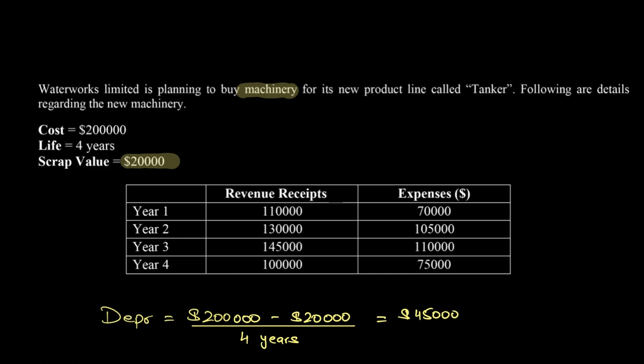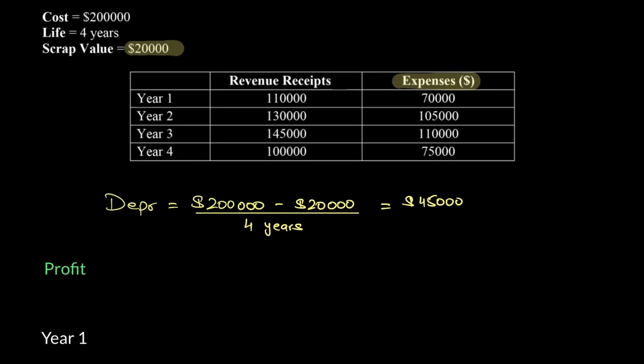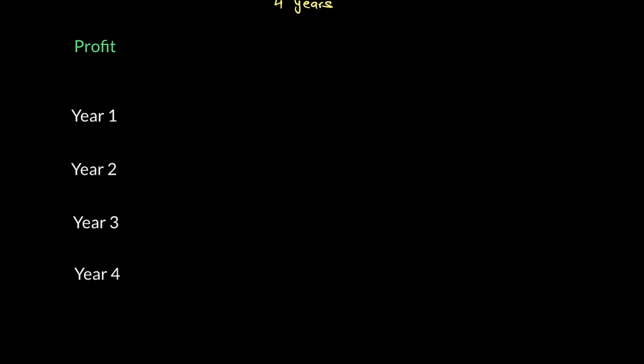Now what information do we have? They've given us the revenue receipts. That's the receipt that they expect they will earn every year. And they've given us the word expenses. So if you guys see the word expenses, expenses is an accounting word. It means that this includes your cash expenses and this depreciation too. So depreciation is included in these expenses. Now using this, let's first calculate profit because the information is directly available. We have our revenue receipts and our expenses. So we can first calculate our profit for each year.